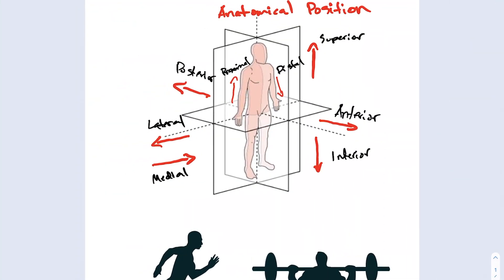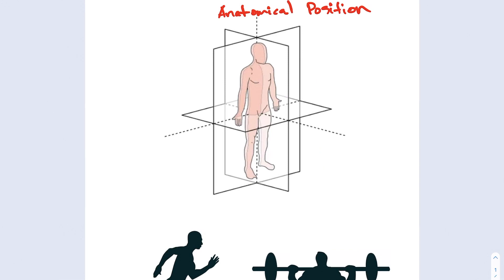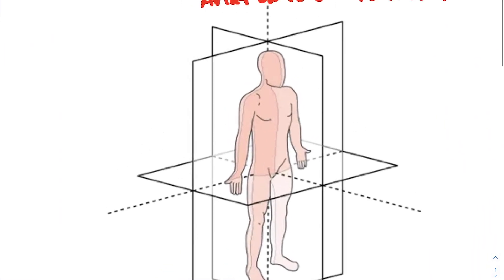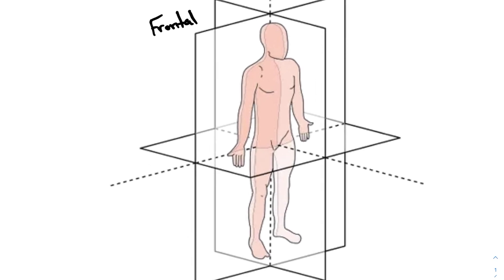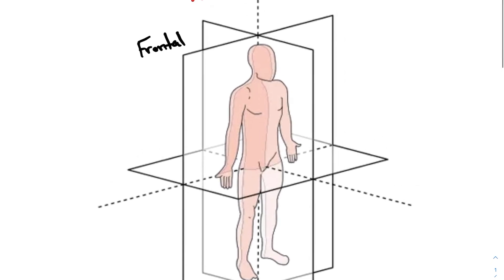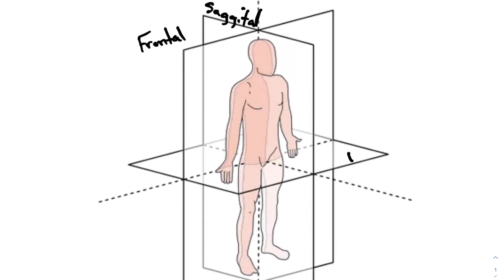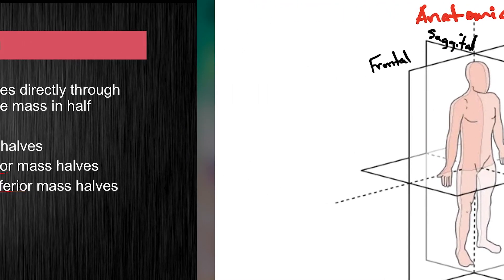Let's go ahead and label those on our person. These rectangles that you see are the planes. There's the frontal plane dividing this person into a front and a back half — an anterior and a posterior half. Here is the sagittal plane, which divides somebody into a right and a left half. And finally we have the transverse plane, which divides somebody into a superior and an inferior half. Those are your three cardinal planes of motion.